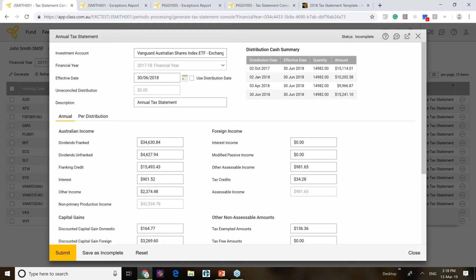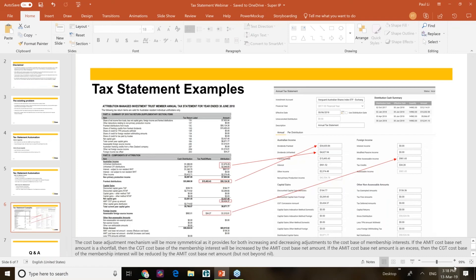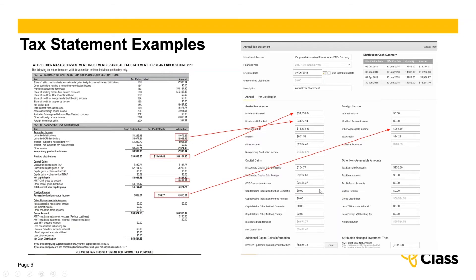Based on the cash distribution received and the Class tax template, we've actually applied and derived the tax statement components that we place in the actual event. This would otherwise require someone to manually go and work out those numbers. This is the tax statement for Vanguard VAX, one of the more common Vanguard funds. Because of the way that AMIT works, for the franked distribution, you're working off the attribution amount and not the cash distribution, so you have to do some calculation to work out which boxes go where. We've automated all of that for you.